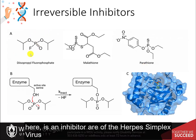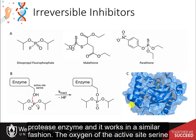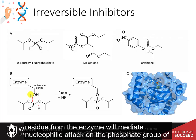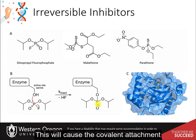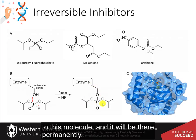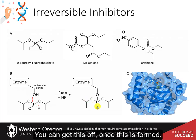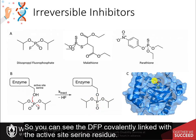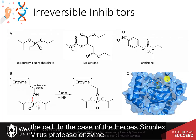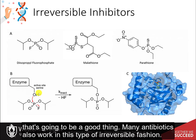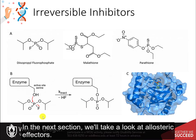Diisopropylfluorophosphate (DFP) is an inhibitor of the herpes simplex virus protease enzyme and works in a similar fashion. The oxygen of the active site serine residue from the enzyme mediates nucleophilic attack on the phosphate group of the DFP molecule, causing covalent attachment of the active site serine residue to this molecule permanently. Once formed, this linkage cannot be reversed, blocking the active site serine from its normal function. In the case of the herpes simplex virus protease enzyme, that's going to be a good thing. Many antibiotics also work in this type of irreversible fashion. In the next section, we'll take a look at allosteric effectors.